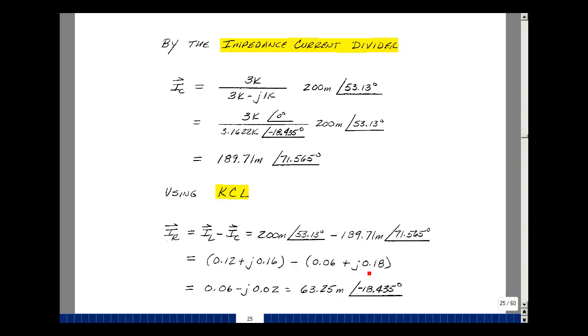because of the minus sign, will be 0.06. And then we're going to add this one and subtract this one. We get 0.02 minus j. We're going to punch these in our calculator. I get 63.25 milli, and the minus 18.435.